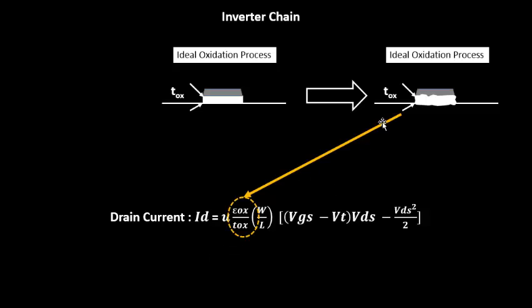So far we've found two parameters that can tune the drain current: the W/L ratio and the oxide thickness. Our next job is to find the relationship between the drain current and the delay of the cell.